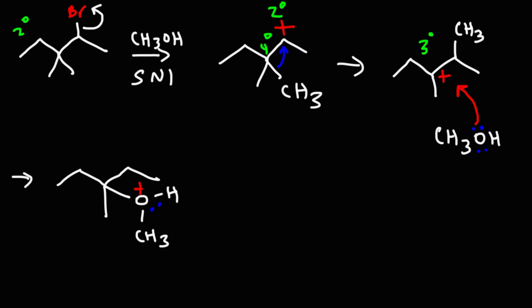Whenever hydrogen is attached to a positively charged oxygen atom, that hydrogen is highly acidic. So, methanol, it's going to behave as a weak base, and it's going to extract a proton. The final result is that we're going to get an ether as the major product instead of an alcohol.